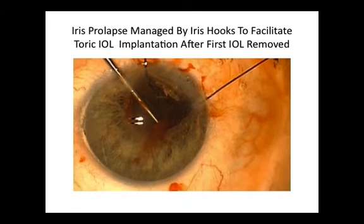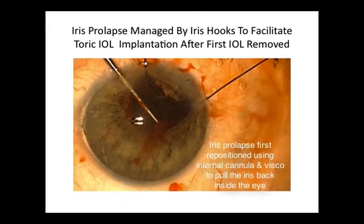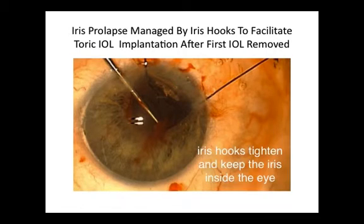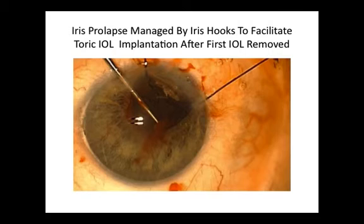In this case, the key point was to manage the iris prolapse by firstly gently reinserting the iris with viscoelastic material into the eye, and then subsequently tightening the iris and pulling it posteriorly under the corneal section by way of two posteriorly placed iris hooks. The pupil enlargement was then sufficient to facilitate toric intraocular lens entry and its appropriate positioning at the correct meridian.